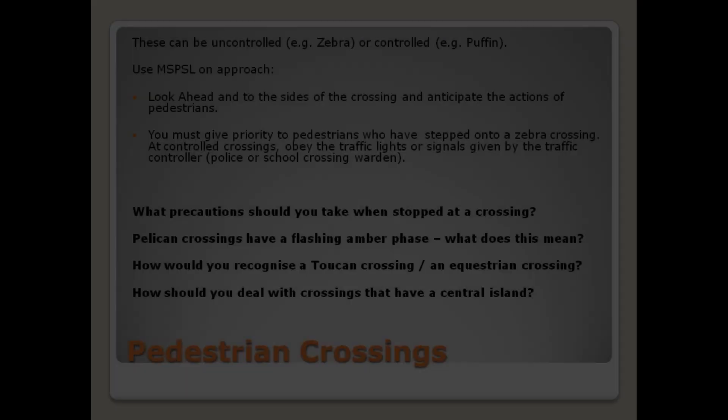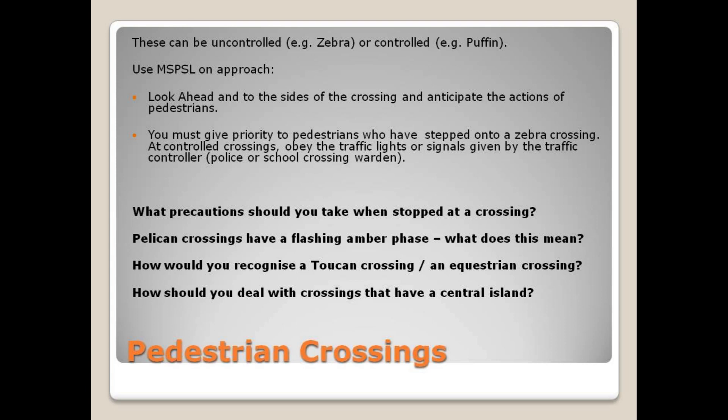Pedestrian crossings. These can be uncontrolled, e.g. zebra crossings, or controlled, e.g. puffin crossings. Use MSPSL on approach. Look ahead and to the sides of the crossing and anticipate the actions of pedestrians. You must give priority to pedestrians who have stepped onto a zebra crossing. At controlled crossings, obey the traffic lights or signals given by the traffic controller, police, or school crossing warden.